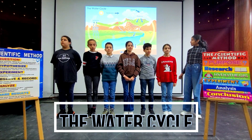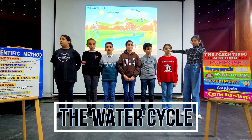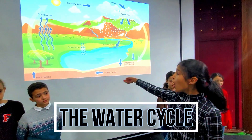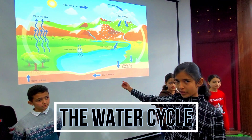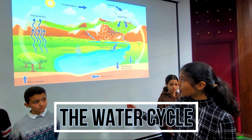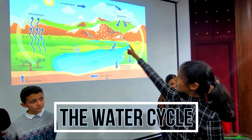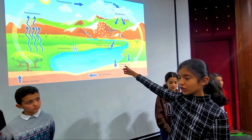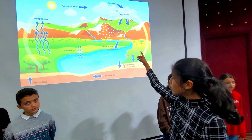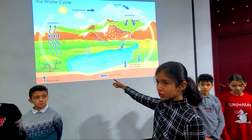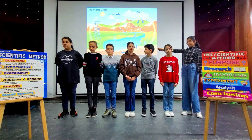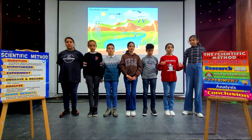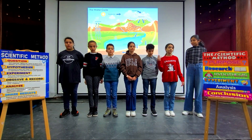The Water Cycle. We get fresh water through the water cycle. Over and over again, water moves from the oceans and rivers to clouds. Then it falls down on the land as rain or snow. Water moves back to the oceans and rivers. Then the cycle begins again. The Water Cycle has four parts.